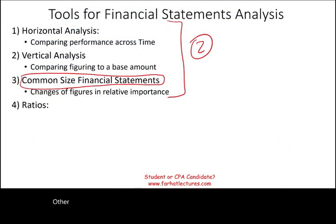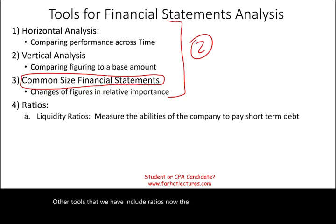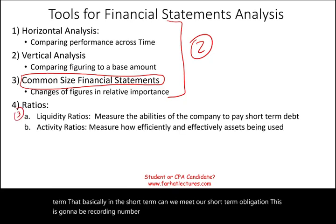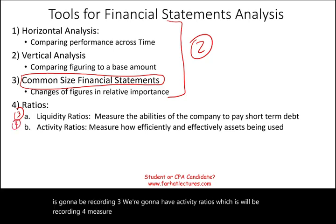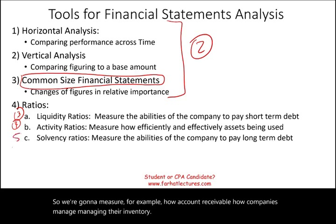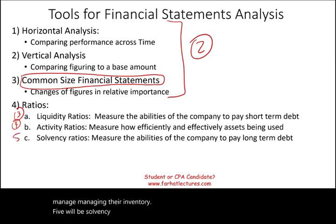Other tools include ratios. The ratios include liquidity ratios — measuring the ability of the company to pay off its short-term debt, basically whether we can meet our short-term obligations. This is going to be recording number three. We're going to have activity ratios, which will be recording number four — measuring how efficiently and effectively assets are being used, such as how companies are managing their accounts receivable and inventory. Number five will be solvency ratios, measuring the ability of the company to pay off long-term debt.